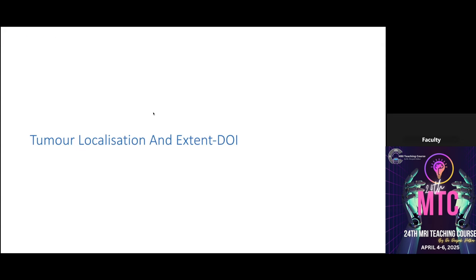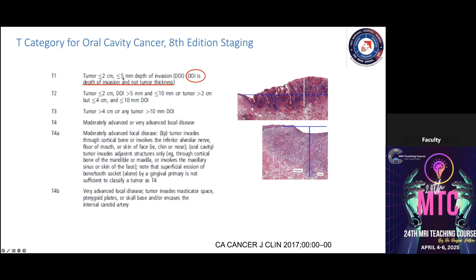The most important measurement in tumor localization is the depth of invasion. In the 8th AJCC staging, it is not tumor thickness or cross-section but the depth of invasion — measured from the basement membrane of the tongue. On coronal sections, we draw a horizontal line and measure toward the center of the tongue: that is the depth of invasion, as distinct from tumor thickness.